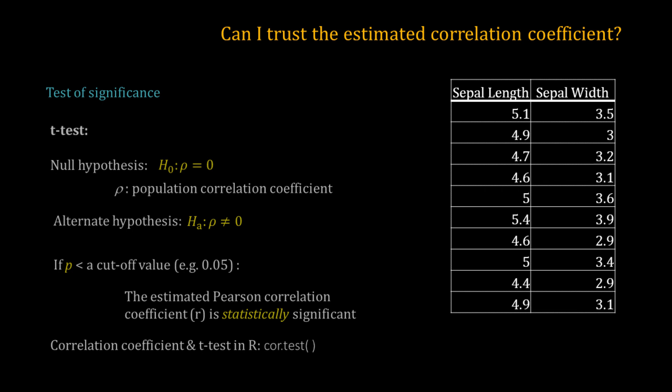Now I have taken a real data set — the Iris dataset — which contains measurements of sepal length and sepal width. I truncated the data to a sample size of 10. The Pearson correlation coefficient for this data is 0.79, quite a good positive correlation. The p-value from the T-test is much smaller than the cut-off of 0.05, so I reject the null hypothesis. The calculated Pearson correlation coefficient is statistically significant, and I can reliably conclude that sepal width and sepal length have a positive linear association.